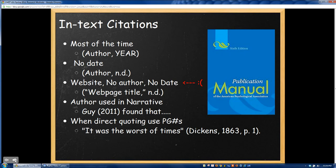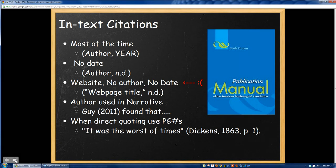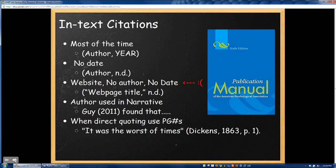Sometimes you may find a source that is missing some information. For example, if it's missing the date, then you use n.d. for no date, and that's fine. But do a bit of digging around, because sometimes you can actually find the date if you put a little work toward it. Rarely — and I stress rarely — you will have some need to include a website that has no author and no date. This probably means it's one of those red quality websites you shouldn't use. There's probably somewhere out there you can find a better source. But if for some unknown reason you need to include a site like that, use the webpage title in quotation marks, and then again n.d. for no date.